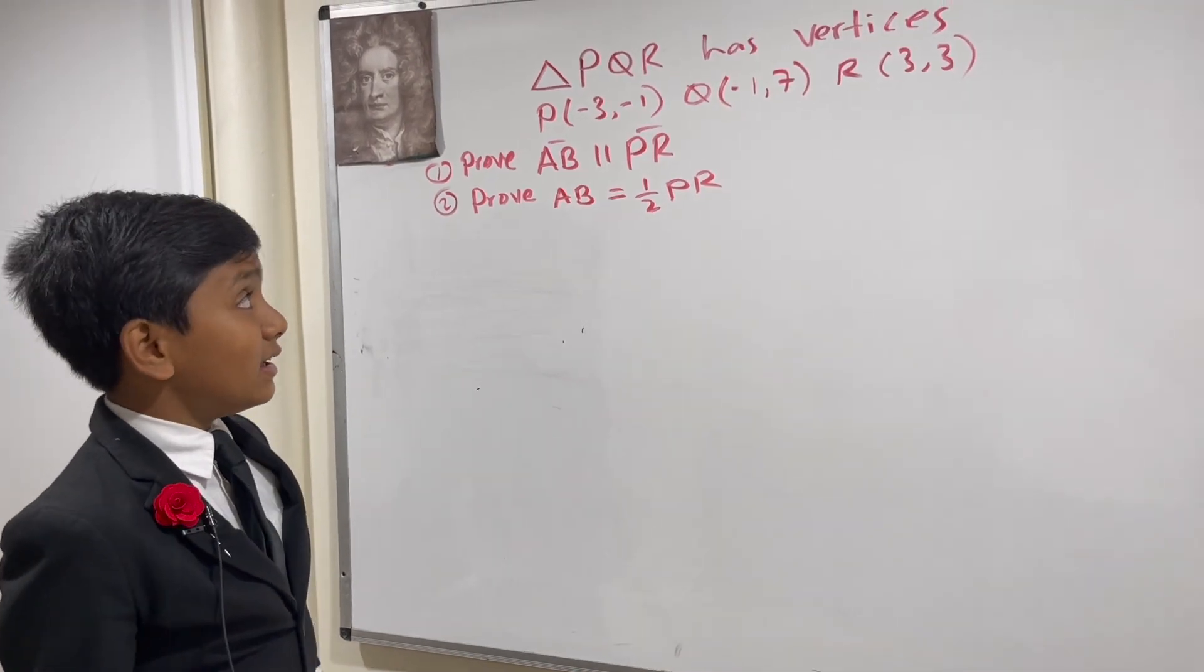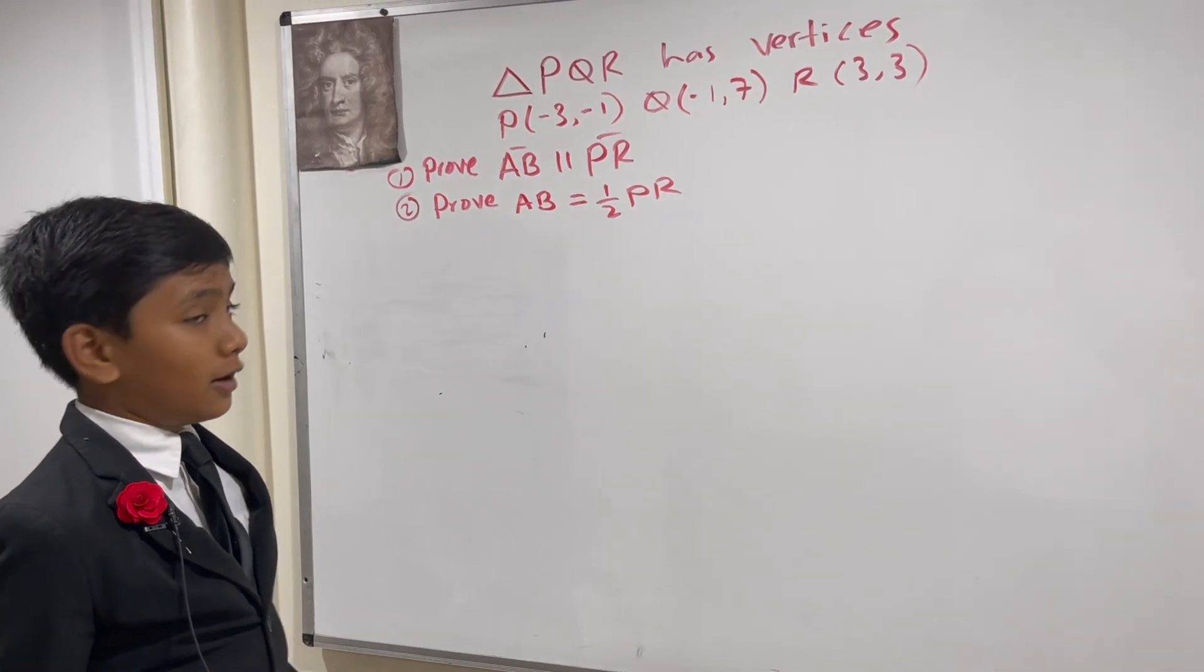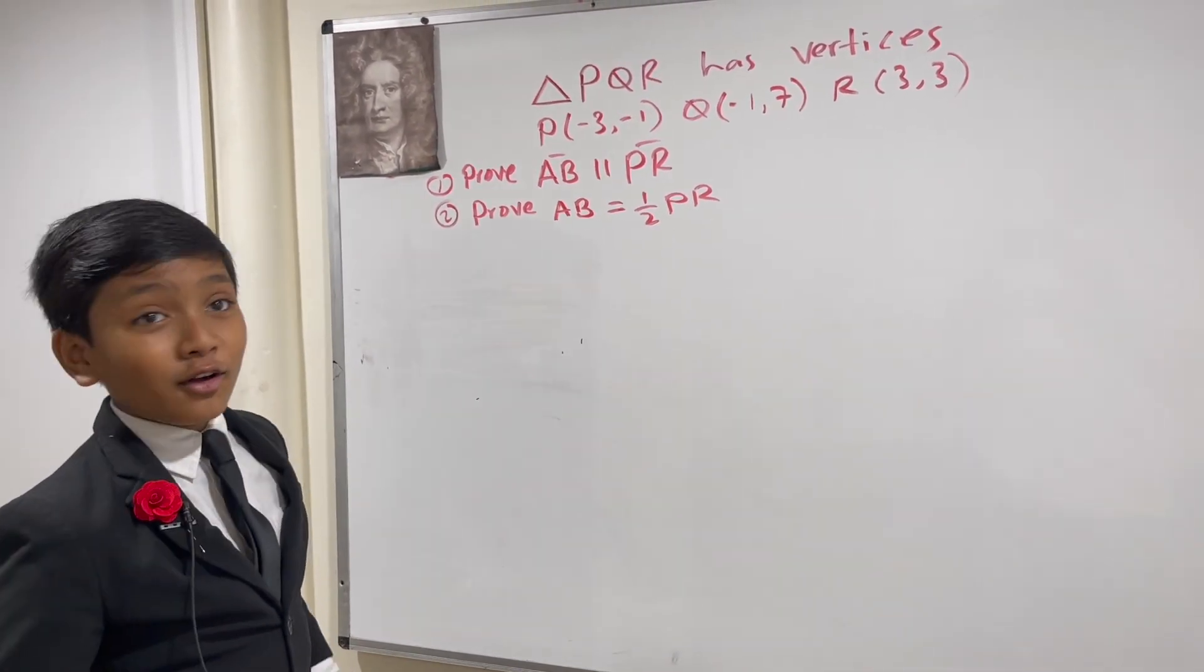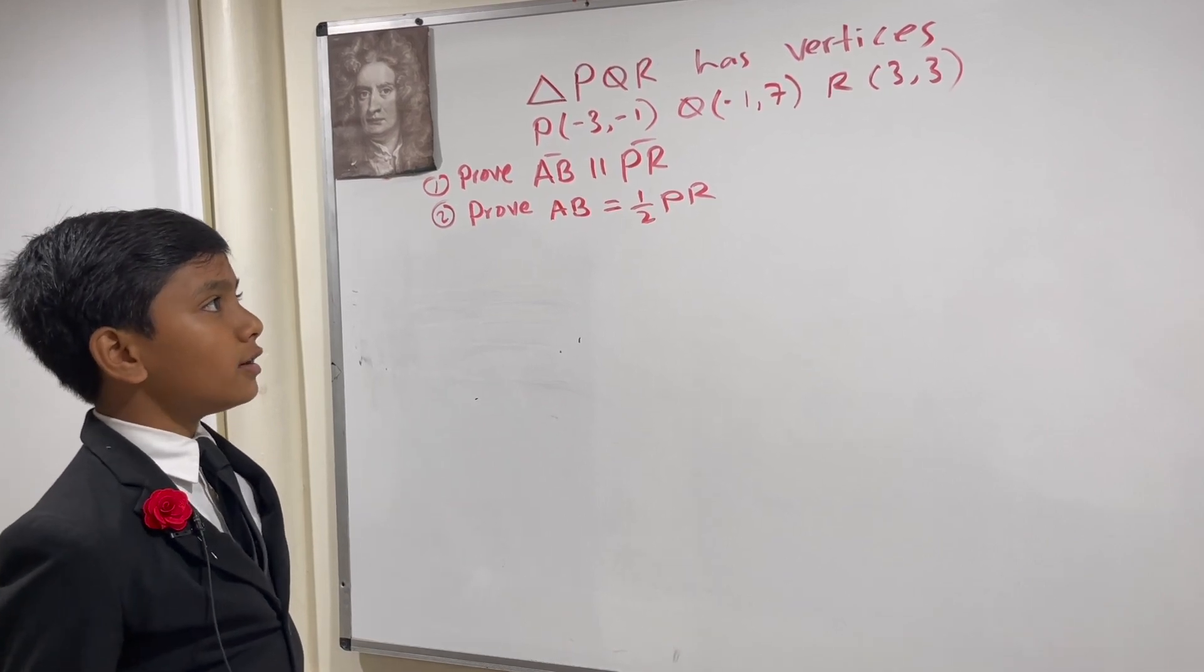Has vertices P at negative 3, negative 1. Q at negative 1, comma 7. And R at 3, comma 3.